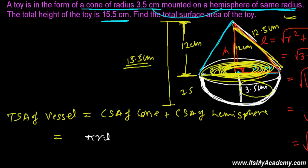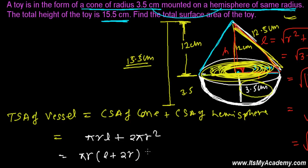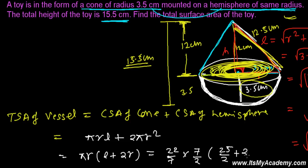The curved surface area of a cone is π·r·l and of a hemisphere is 2·π·r². Taking π·r as common, we get π·r·(l + 2r). Substituting values: π = 22/7, r = 7/2, l = 25/2. We can cancel 7 with 7.